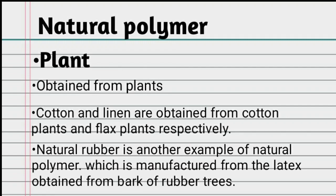Natural polymer is made in two parts — first is plant polymer and second is animal polymer.